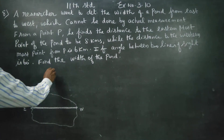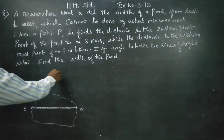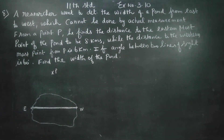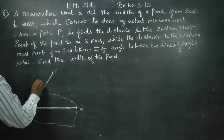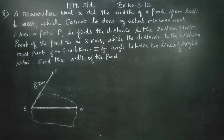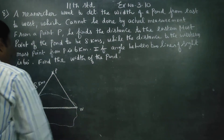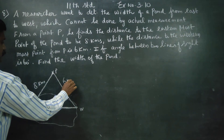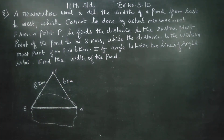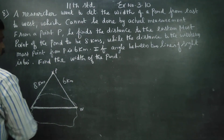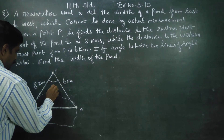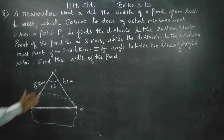From a point P, he finds the distance to the easternmost point of the pond to be 8 kilometers, while the distance to the westernmost point is 6 kilometers. If the angle between the two lines of sight — the eastern line of sight and the western line of sight — is 60 degrees, find the width of the pond.